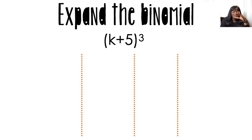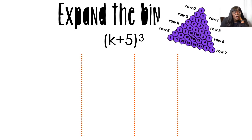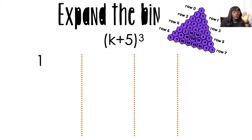I can already sense my students are like, I don't know what's happening right now. That's okay. So I have K plus 5 to the power of 3. I'm going to use row three, which is 1, 3, 3, 1. The triangle — 1, 3, 3, 1 — those are your coefficients. Look at the triangle, find your coefficients: 1, 3, 3, 1.